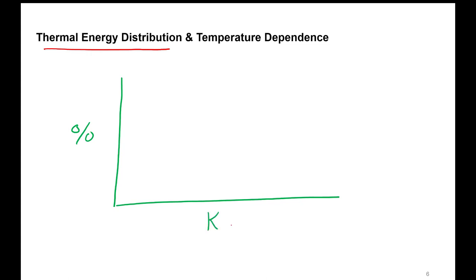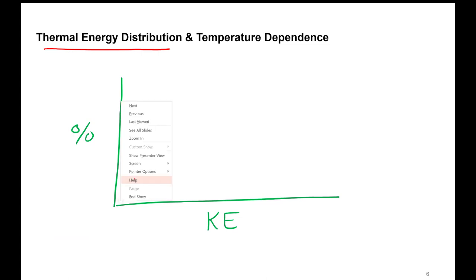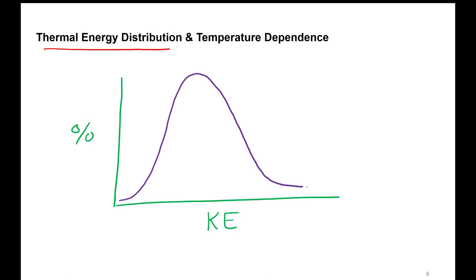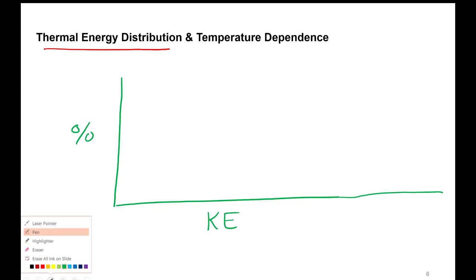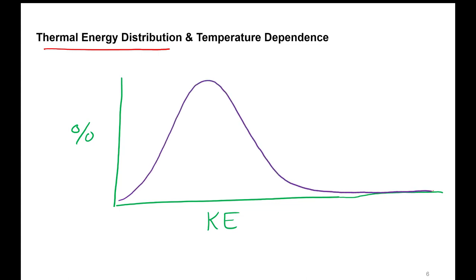If we plot the percentage of molecules that have a certain kinetic energy, that plot takes what's called a Boltzmann distribution, where there's a small number of molecules that have low kinetic energy, some molecules that have high kinetic energy, and most in the middle. So the thermal energy distribution goes up and then slowly tails off to zero. This tells us that at any given temperature, a small percentage of molecules have really low kinetic energy, a small percentage have high kinetic energy, and most molecules have kinetic energy somewhere in the middle.